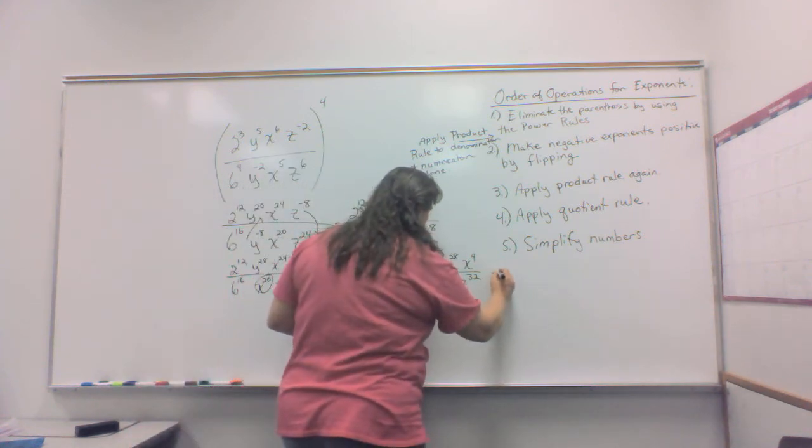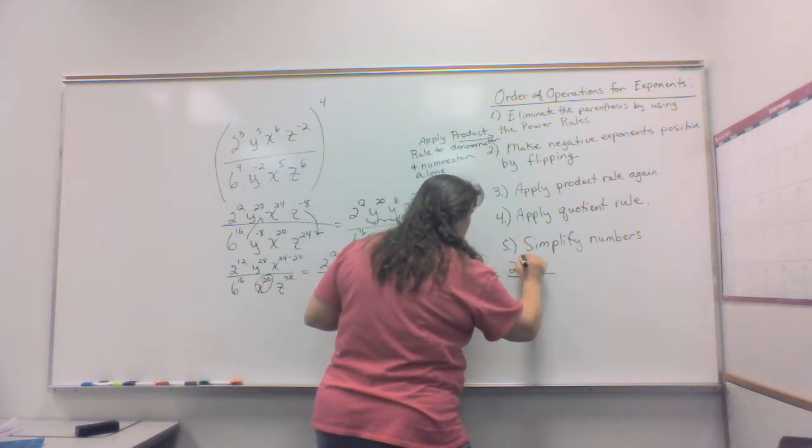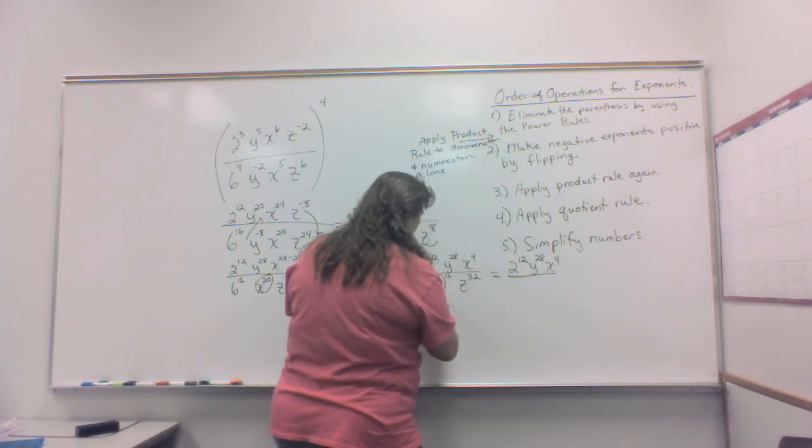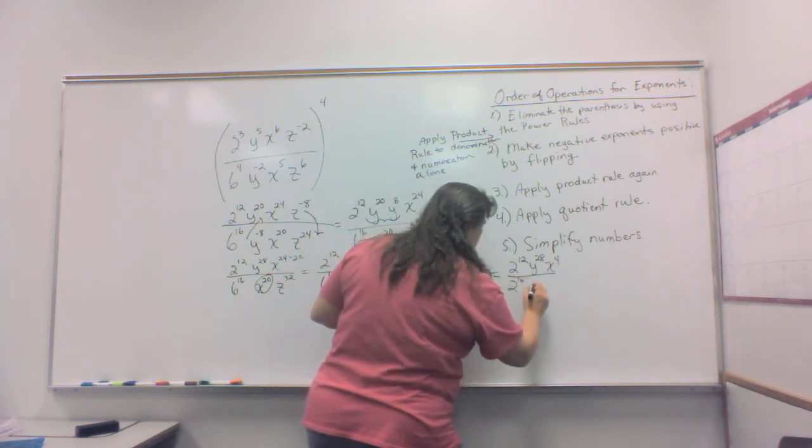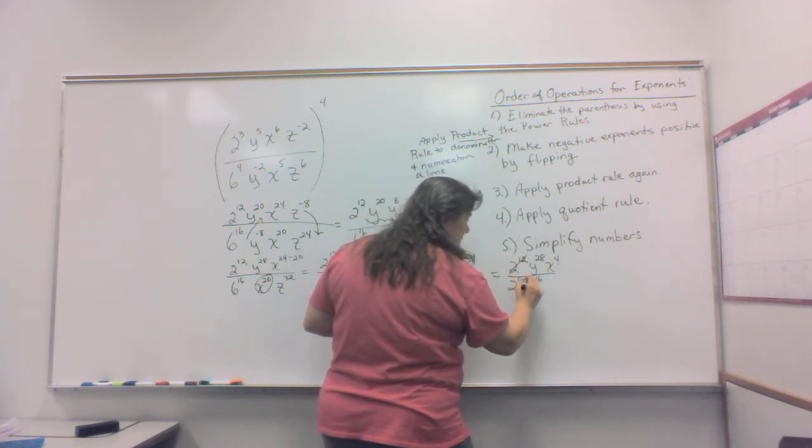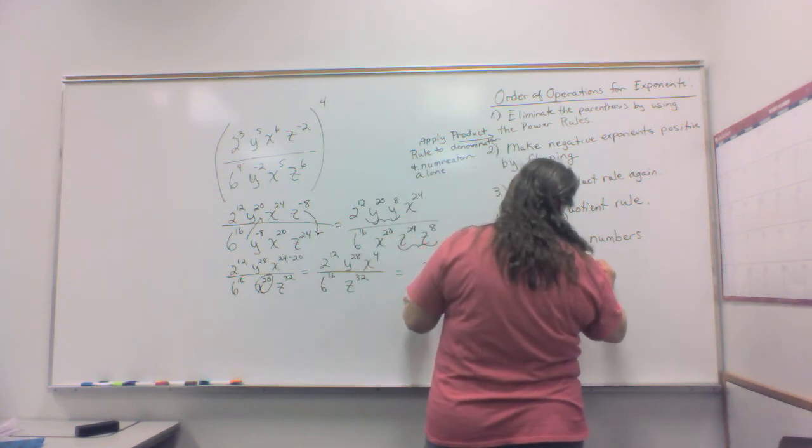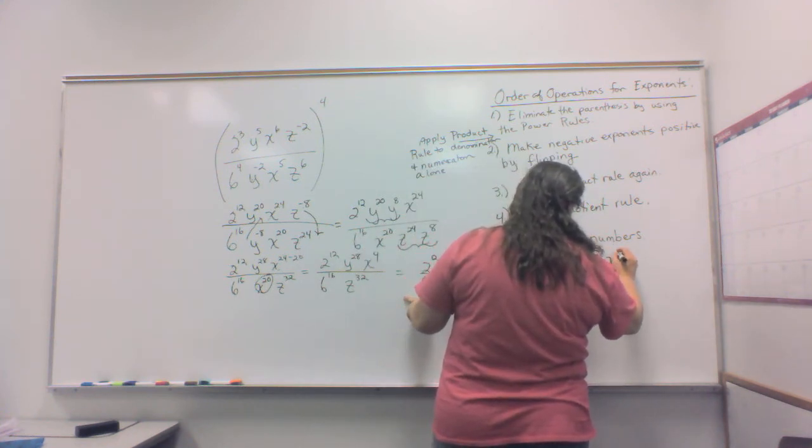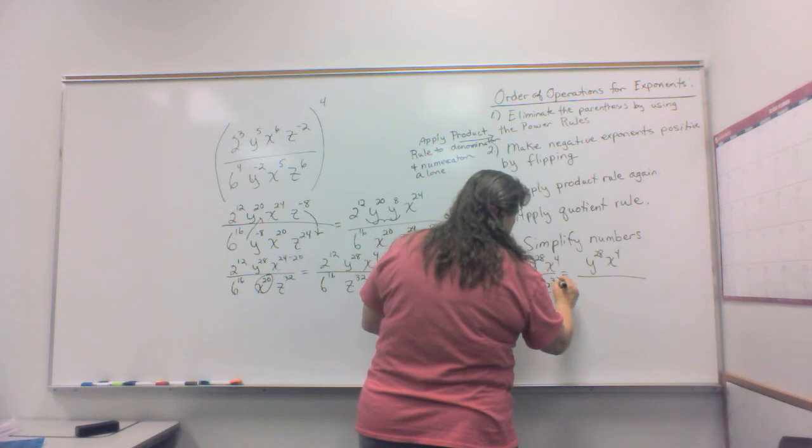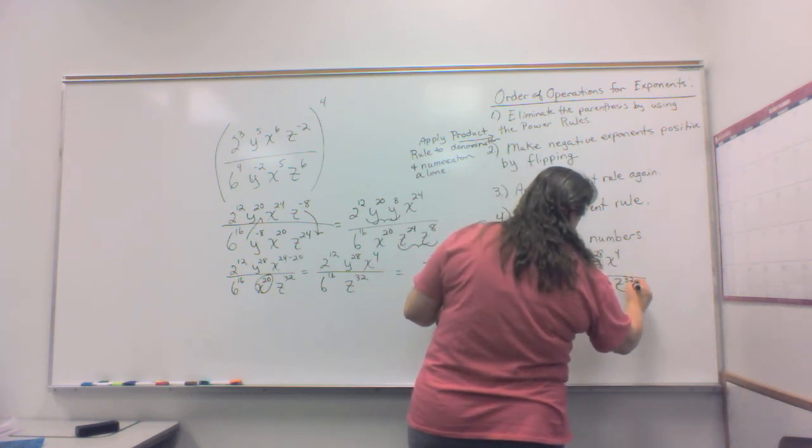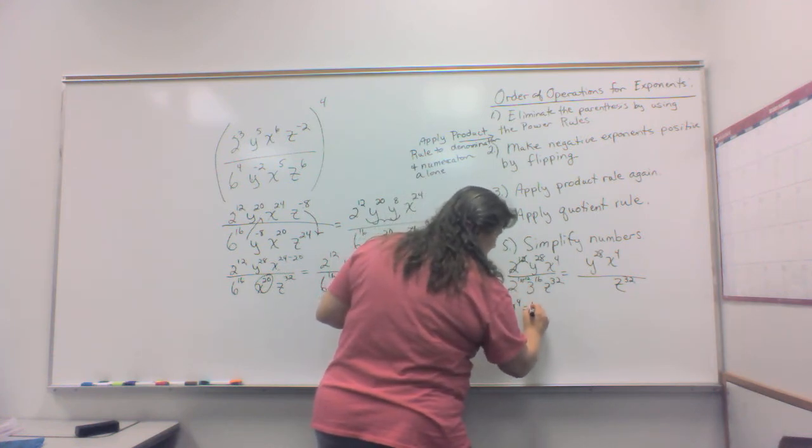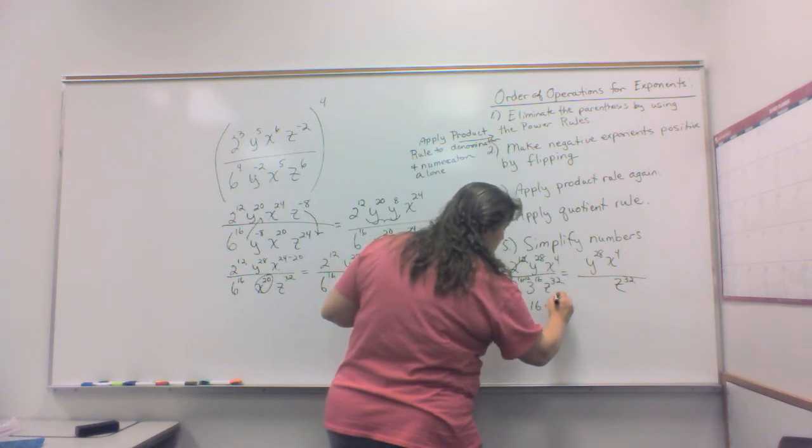So that is going to give me 2 to the 12th, y to the 28th, x to the 4th over 2 to the 16th times 3 to the 16th. Okay, I'm going to subtract my 12th down here and that's going to give me y to the 28th, x to the 4th over, and on the bottom, I've got my z to the 32nd here. I have my z to the 32nd, but this is going to give me 2 to the 4th, which is the number 16, times 3 to the 16th power.